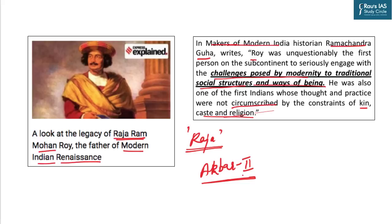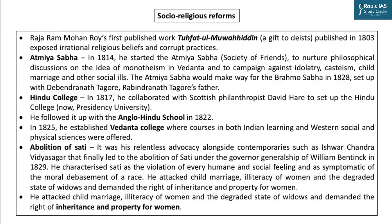From the perspective of the civil service examination, let's discuss some of the contributions of Raja Ramohan Roy. For the prelims examination, you must remember that very early on he published a book called Tofatul Muahideen, which translates into English as 'a gift to deists.' Deists are people who believe in God purely based on rationality and not because of myths and miraculous stories written in scriptures. Raja Ramohan Roy was born in 1772 and he published this book in 1803.